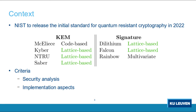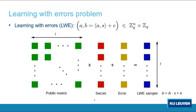Let's talk about the lattice problems used in post-quantum cryptography. The first is the Learning With Errors (LWE) problem, where it is hard to distinguish a randomly sampled A from a sample B, which is formed as the product of public element A with a secret plus an error. We have a public matrix, a secret vector, an error vector, and the LWE sample is also a vector. The bottlenecks are: sampling the public matrix, sampling the secret, the expensive matrix-vector multiplication, and sampling the error, which requires randomness.